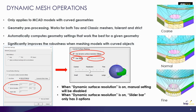If you select the dynamic surface resolution, you can optionally use the slider bar to adjust the surface representation levels such as coarse, normal, or fine. This dynamic surface resolution mesh operation significantly improves robustness while meshing models with curved objects, and it also supports 3D volume mesh and surface mesh in all products. These were the updates that ANSYS had for 2019 R3 for both ANSYS Maxwell and ANSYS HFSS respectively. Thank you.